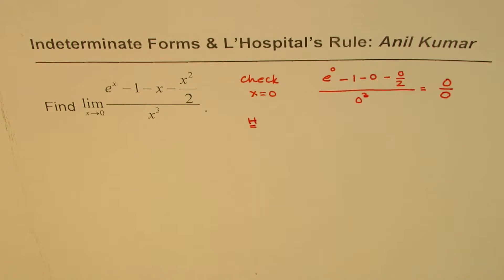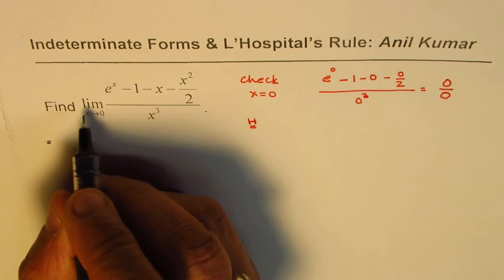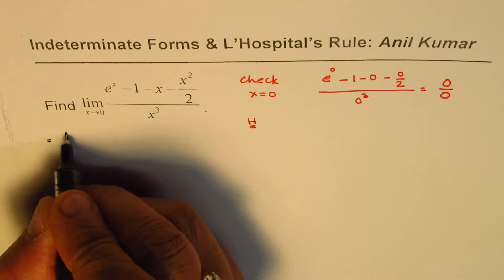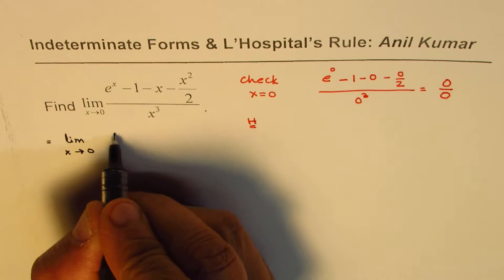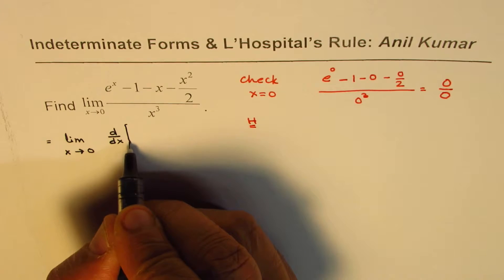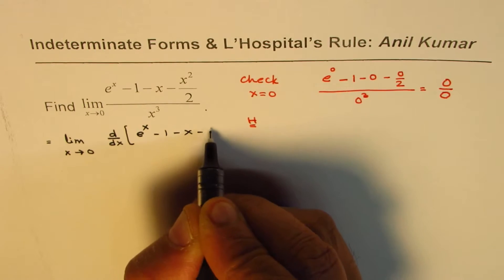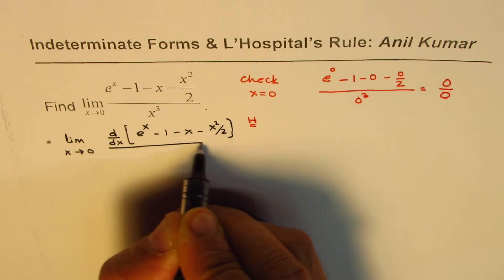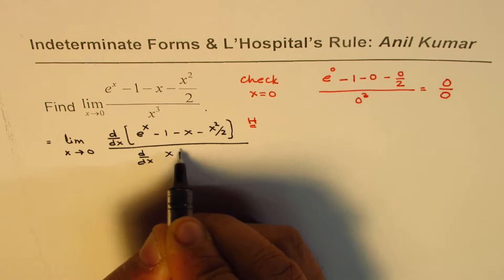The application of L'Hospital's rule is basically that the limit of the ratio or the quotient of functions is same as the limit of their derivatives. So we'll do derivative of the numerator, which is e to the power of x minus 1 minus x minus x square over 2 divided by derivative of x cube.